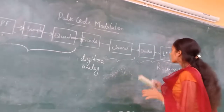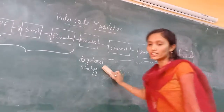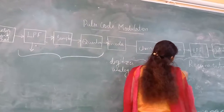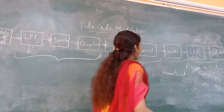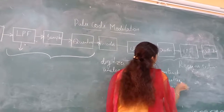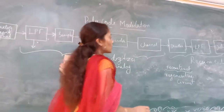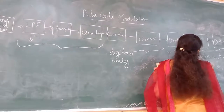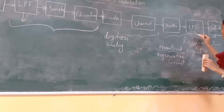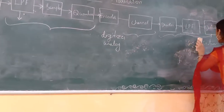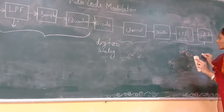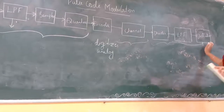In the receiver section, the decoder acts as a demodulator. The digitized output is given to the decoder. In this decoder, it reconstructs the original signal. The decoder has a regenerative circuit which reconstructs the original analog input signal. This decoded signal passes through the destination low pass filter, which eliminates the high frequency components present in the reconstructed signal. The reconstructed original information is gathered at the destination.